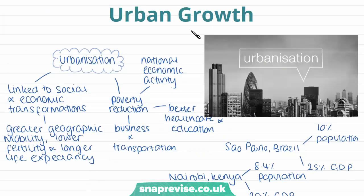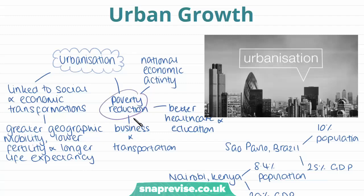Now we're going to look at the causes of urban growth. The process of urbanisation plays a really important role in human affairs and has historically been linked to important social and economic transformations, which have brought about greater geographic mobility, lower fertility, and longer life expectancy. Cities also play an important role in poverty reduction because they hold most of the national economic activity, are home to government institutions, businesses, and transportation networks, and have high levels of education, better healthcare, and easier access to social services.